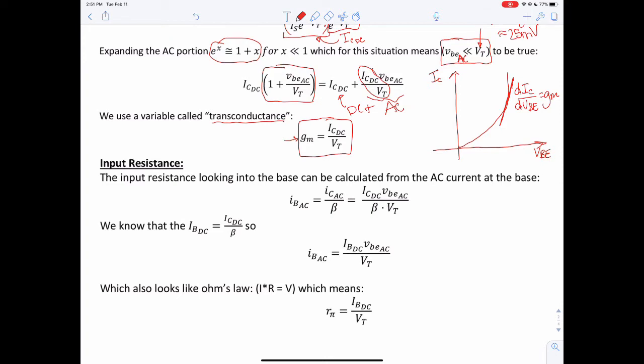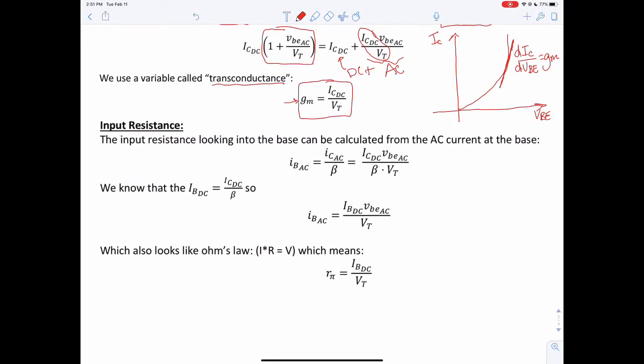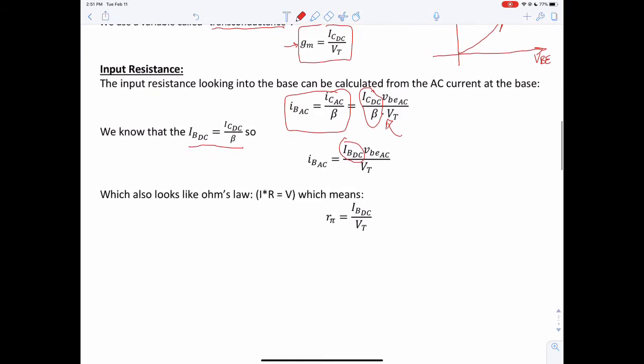This is going to be a variable that we can use in a model now for the AC portion. The other thing that's going to be a strong component of the model is the input resistance. Looking in at the base and looking at the base current, remember that the base current is related to the collector current by beta. If we go back and substitute in just the AC portion, that's going to be the ICDC over VT, but now we have beta. So remember that IBDC was the ICDC over beta, so this portion here is actually IBDC. And then we have it over VT. Again, this looks like Ohm's law, which means that we can use this parameter rpi that describes IB over VT.